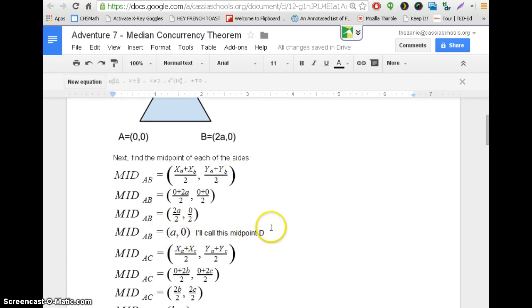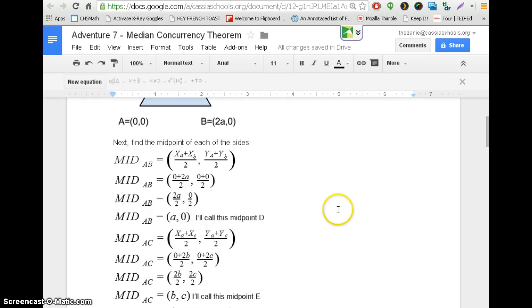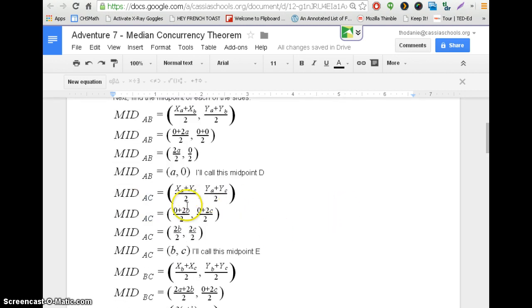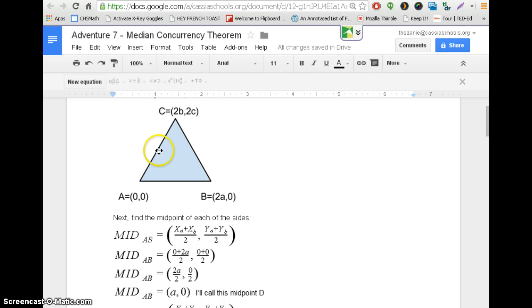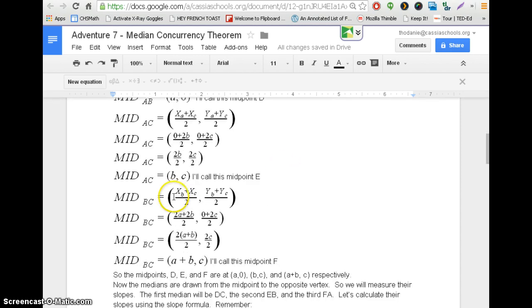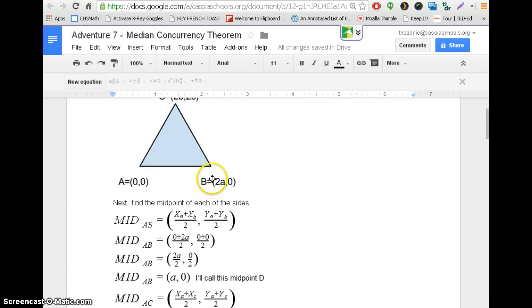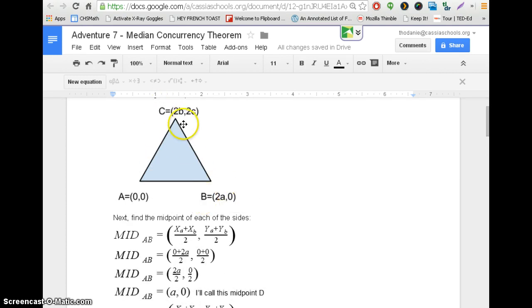Now I continue that for side a, c. And a, c I calculated and plugged in all the coordinates and I simplified it. I got down and I called that midpoint e. So midpoint e would be here. And the median is going to be from e to b. Right? Just like the median here was going to be from d to c, the opposite vertex. Now the last one would be side b, c. And I calculate it for b, c as well. I plug in the values for b and c. And I use the midpoint formula and I find this point over here. I'm going to call f. So my last median goes from a to f.